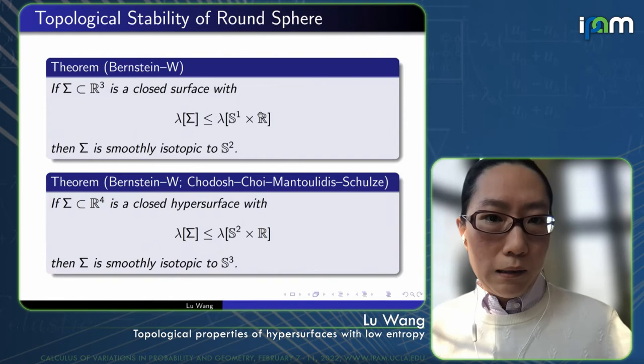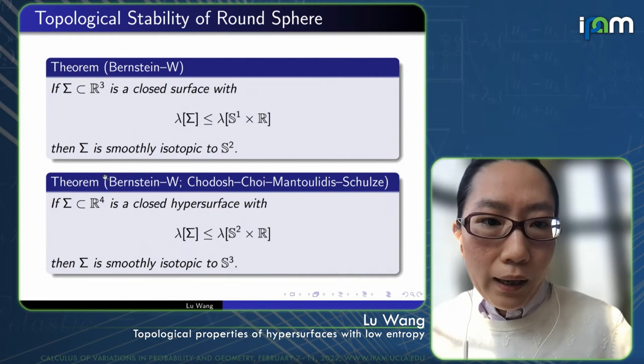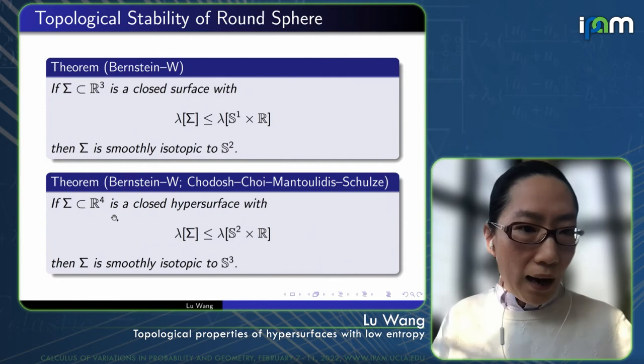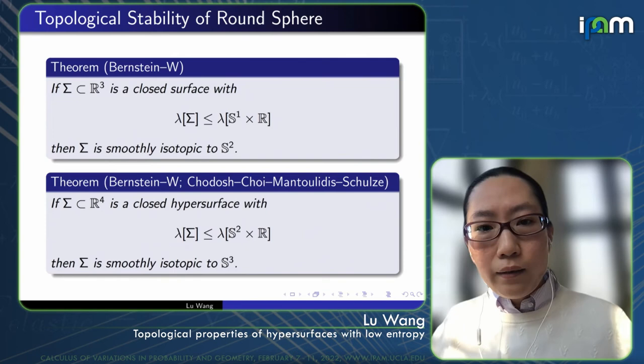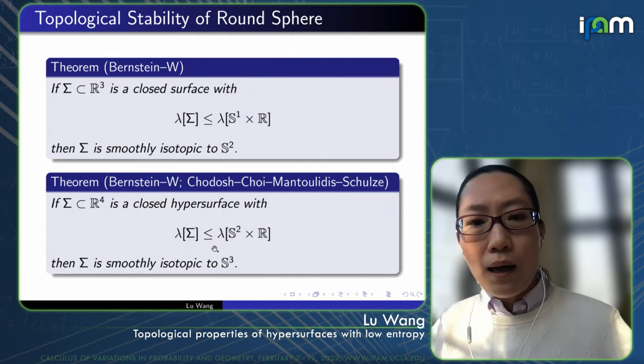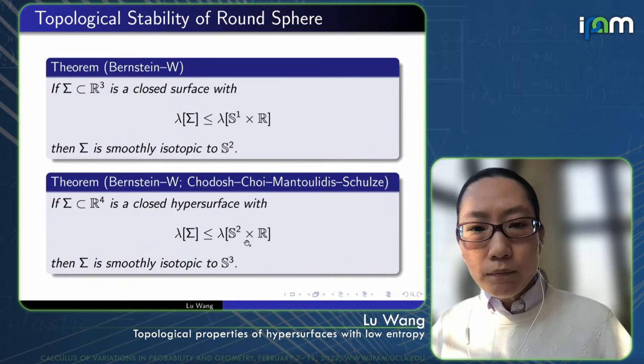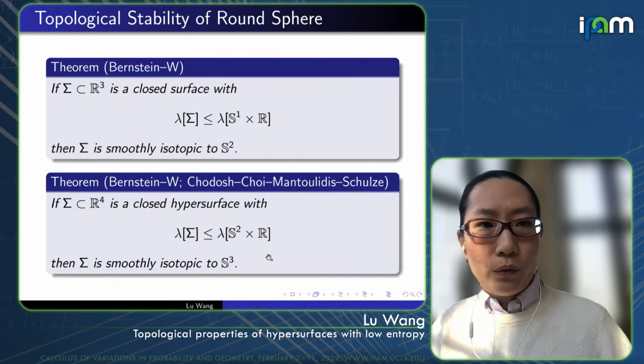Later on, we explored the same type of question in higher dimension. One dimension higher, consider a closed hypersurface in ℝ⁴, and now we assume the entropy of the hypersurface is bounded from below by the entropy of the round cylinder. Then we can still prove that Σ is smoothly isotopic to the three-dimensional round sphere in ℝ⁴.